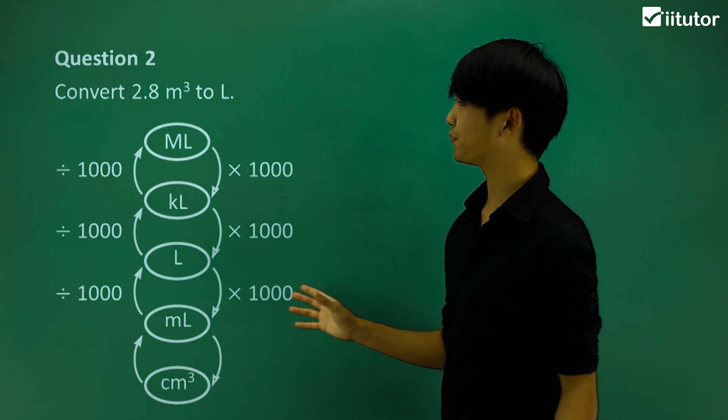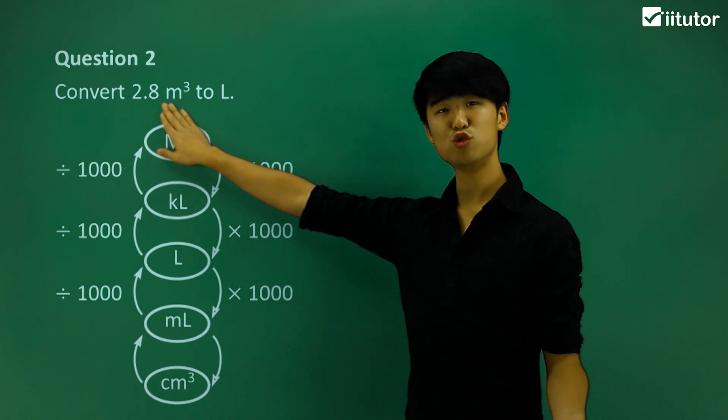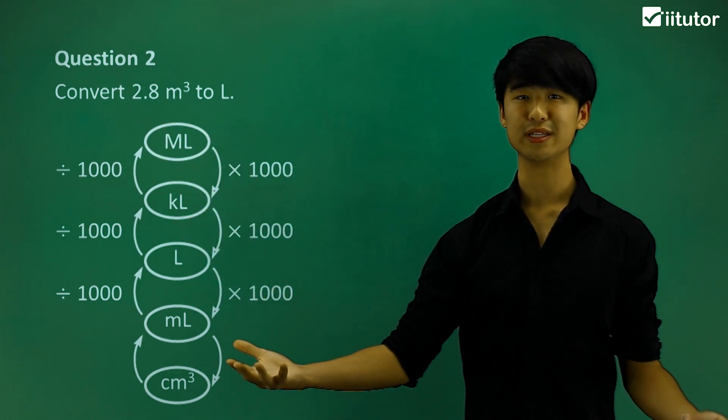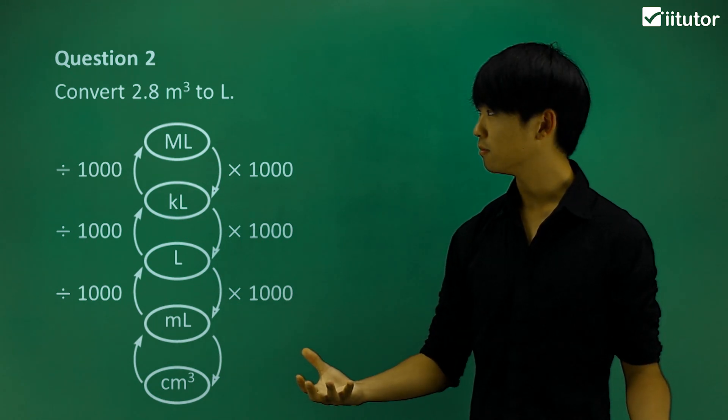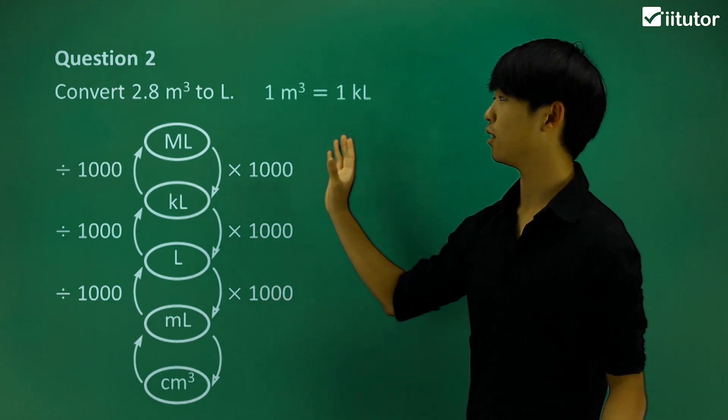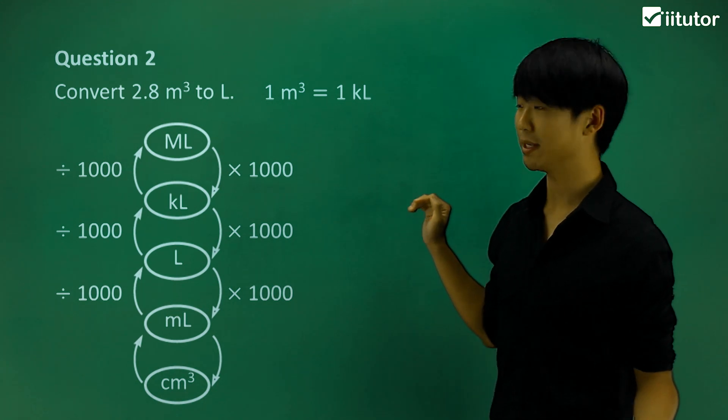So let's move on to question number two. We're going to convert 2.8 meters cubed to liters. So I'm going to start this question off by saying that 1 meter cubed will give me 1 kiloliter.